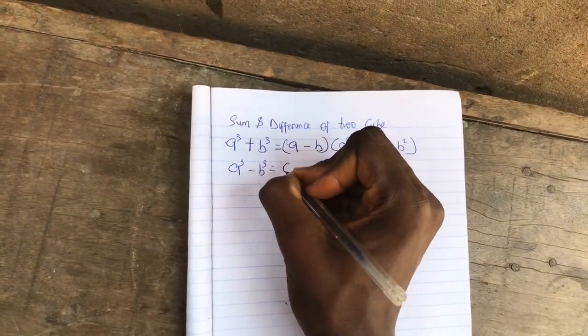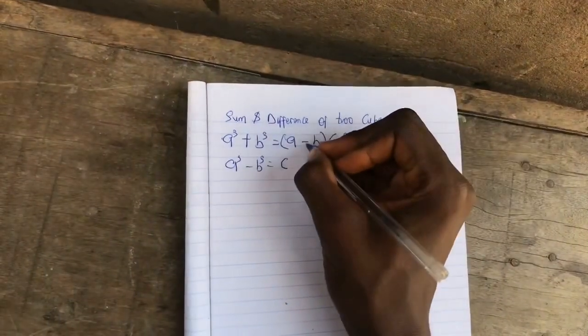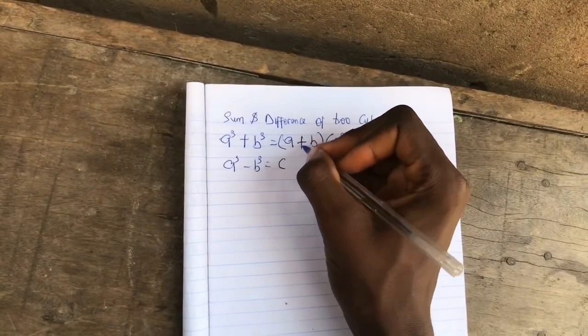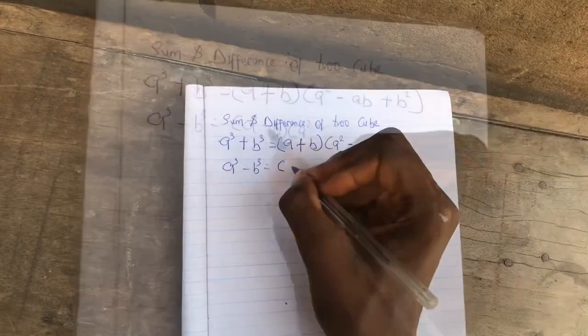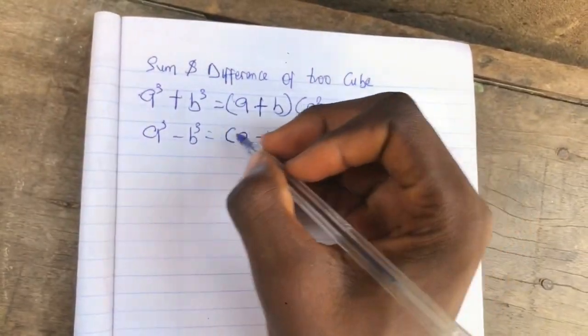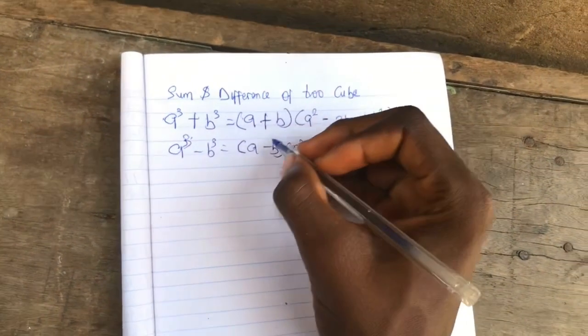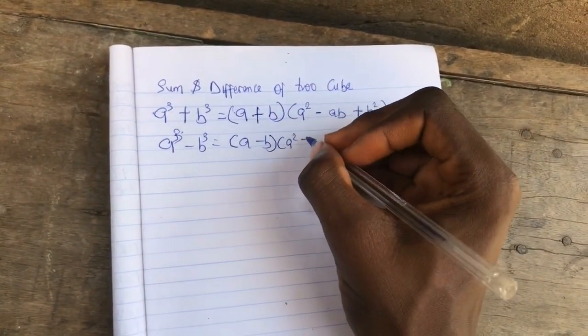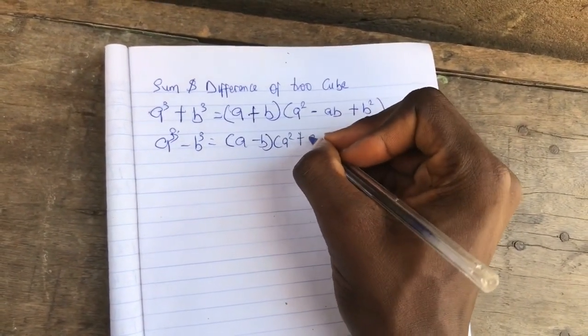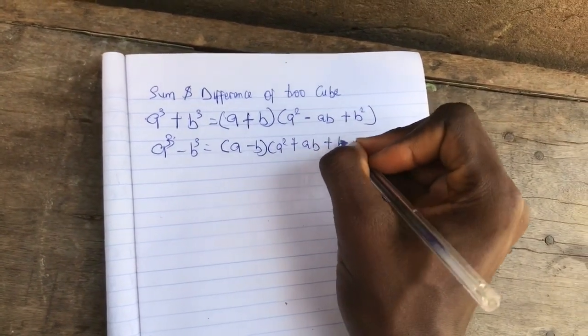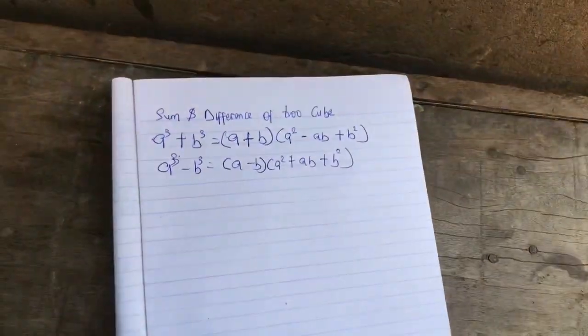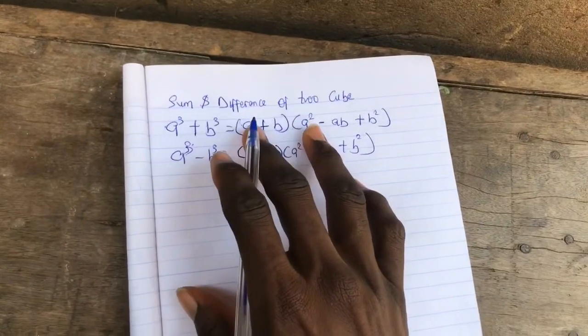For the difference, we have a³ - b³ = (a - b)(a² + ab + b²). This is the formula for it.